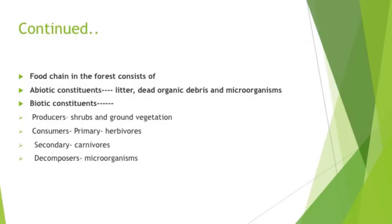Trees are the prime producers of forests — they purify and cool the air and control the climate. The food chain in forests consists of abiotic constituents including litter, dead organic debris, and microorganisms, while biotic constituents include producers such as shrubs and ground vegetation, primary consumers like herbivores, secondary consumers like carnivores, and decomposers such as microorganisms.